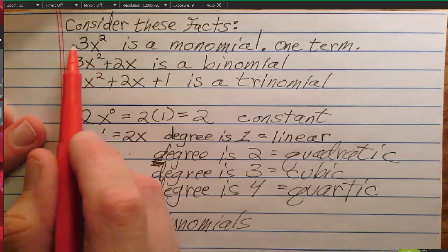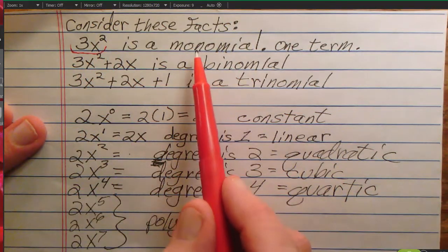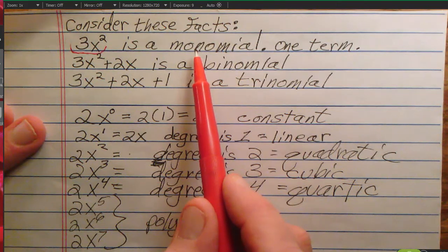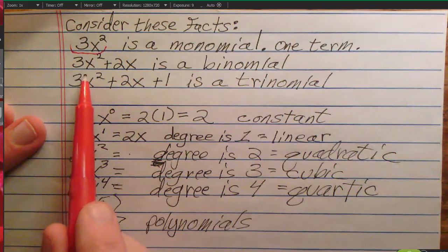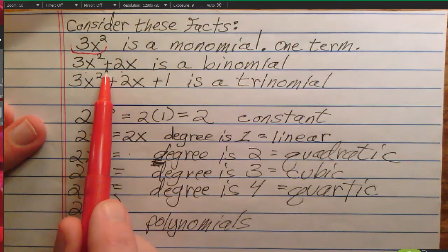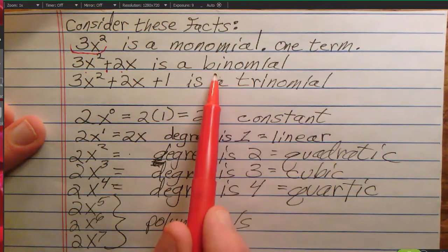When you have one term standing alone, like 3x squared, this is a monomial. It's one term. When you have two terms connected with a plus sign, you have a binomial. Bi means 2.